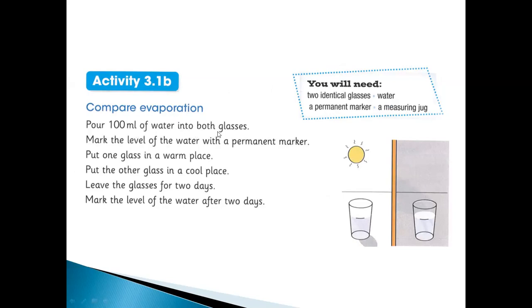Put the same amount of water in both glasses and mark the water level with a permanent marker. Put one glass in a warm or sunny place and the other glass in a cool place at normal room temperature. Leave the glasses for two days. After two days, check the water level.